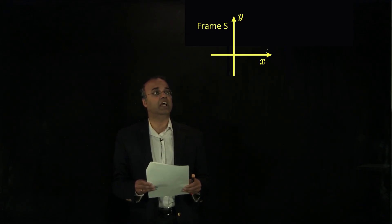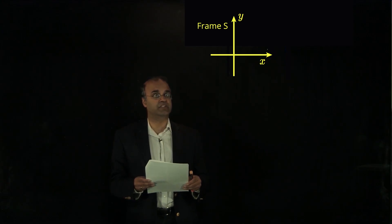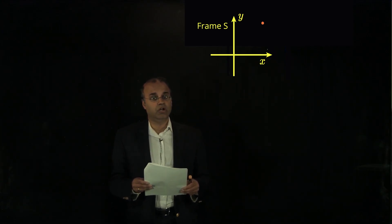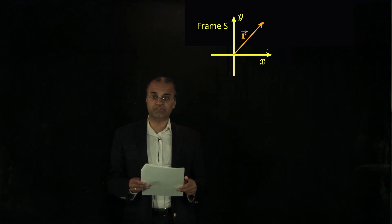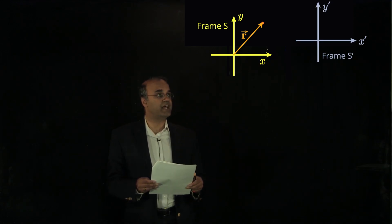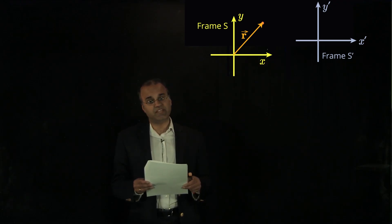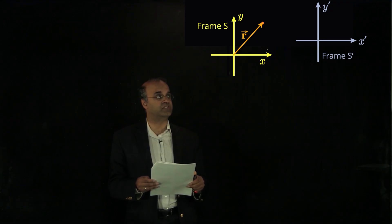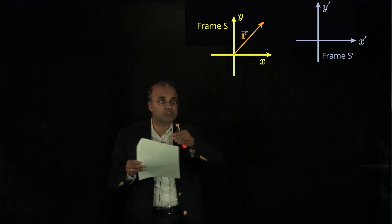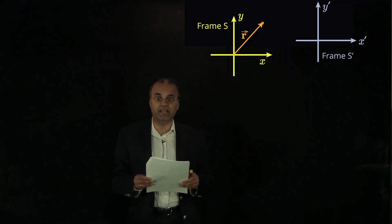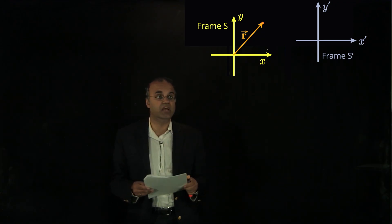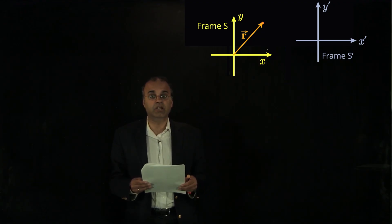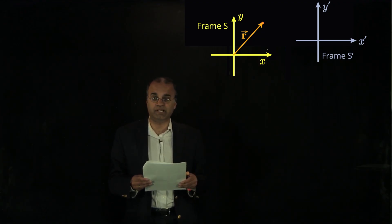Let's begin by considering an observer in a particular reference frame. We'll call that reference frame S and denote it by coordinate axes x and y. Let's consider an object that, in that reference frame, is at a position vector r. We can then consider a second reference frame, which I'll call frame S prime, denoted with coordinate axes x prime and y prime. In this example, I'm going to assume that the coordinate axes in frame S prime are parallel to, but displaced away from, the coordinate axes in frame S. For simplicity, we'll stick to parallel axes in this example.